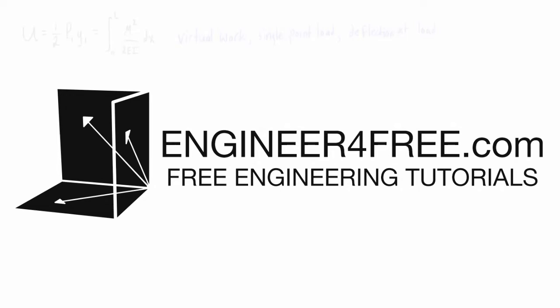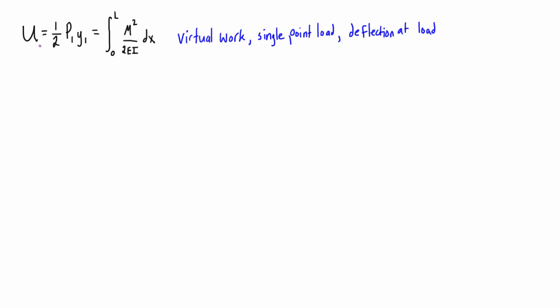Hey guys, welcome back. Hopefully you have seen this equation before in my previous videos. This was what we were using for virtual work. We have a single point load on a beam and we wanted to find the deflection at that point load. This is a great little formula we can use because typically as long as you can get the moment in terms of x, you can solve the right-hand side and rearrange to find the deflection at the point load when you have a structure with a single point load.